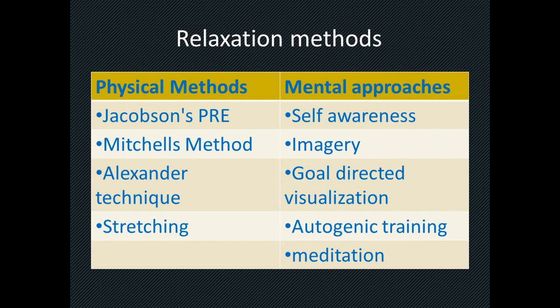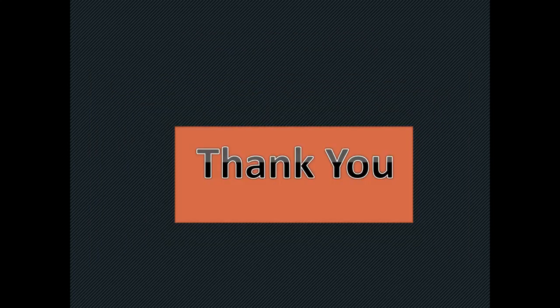The last flowchart covers relaxation methods, divided into physical approaches and mental approaches. Physical approaches, as described in Rosemary Payne's pioneer book on relaxation, include Jacobson's Progressive Relaxation Exercise, Laura Mitchell's method, Alexander method, and stretching. Mental approaches include self-awareness, visual imagery technique, goal-directed visualization, autogenic training, and meditation. Some methods provide both physical and mental effects. Thank you very much for watching — I hope these flowcharts help you implement them in your clinical practice. Please subscribe, like, and share.